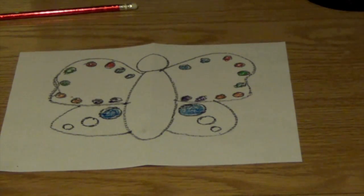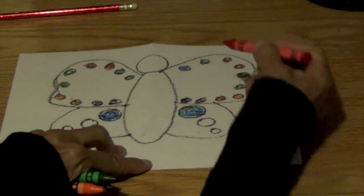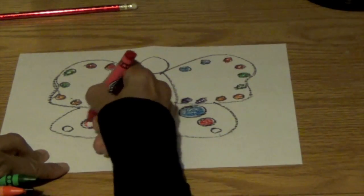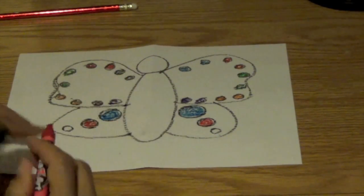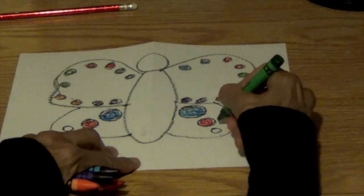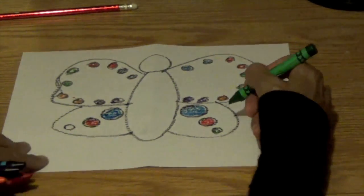Then the next color I want you to get is red. We're going to continue this pattern. If it's blue, then the next pattern is red. And what comes after the red? Look up here. What's the next color? Green. Yes. Green.